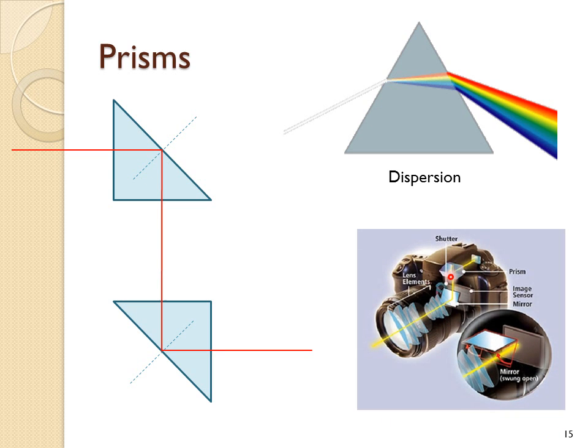SLR cameras use prisms to reflect light down through the lens of the camera so that you see a picture of what you're about to take.